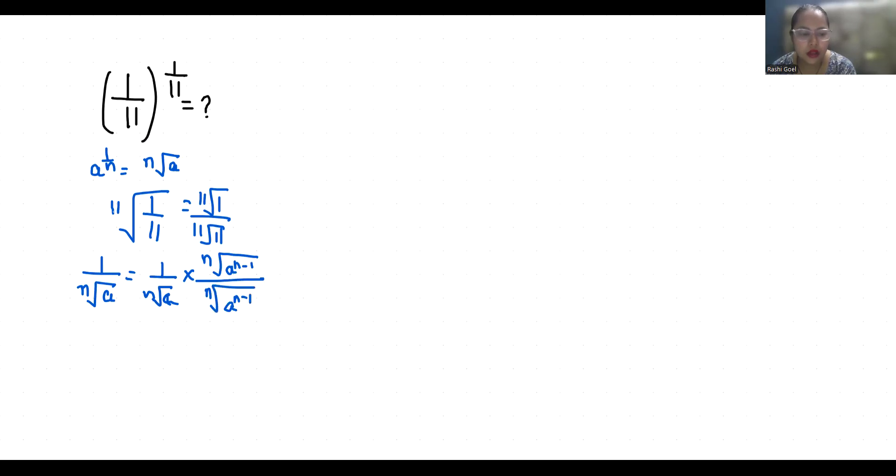So 1 by 11th root of 11 equals 1 by 11th root of 11 times 11th root of a^(11-1). In place of a we have to write 11, so 11^(11-1), which is 11^10.